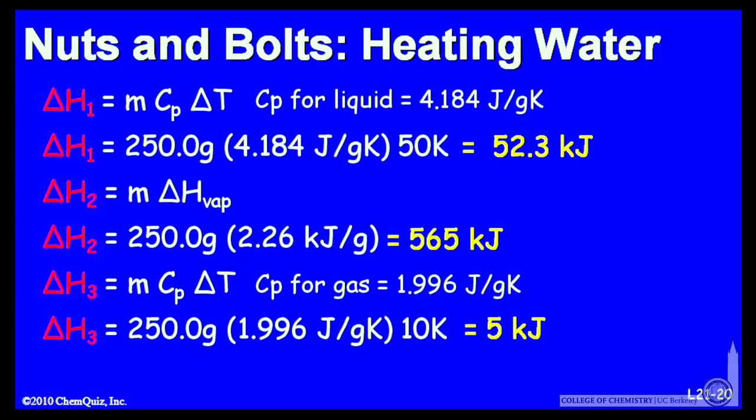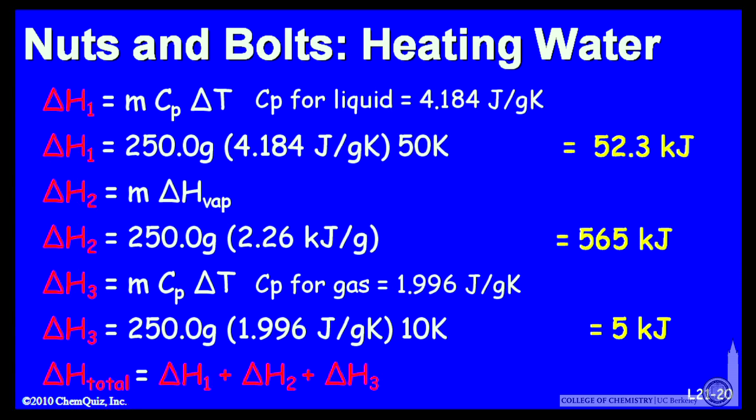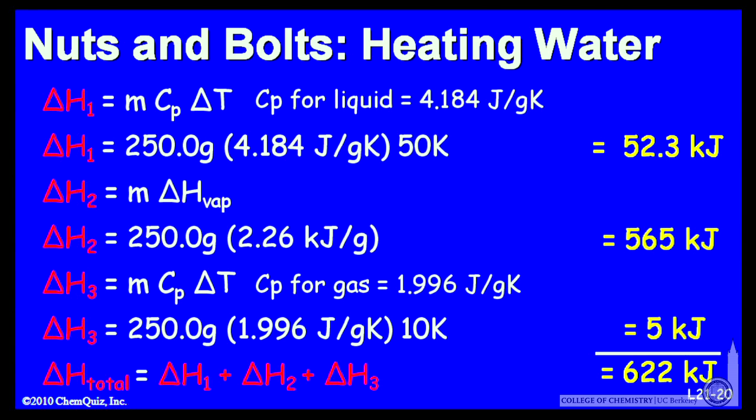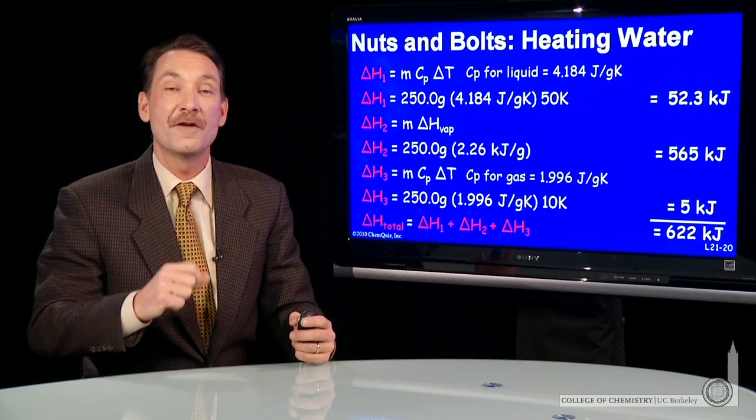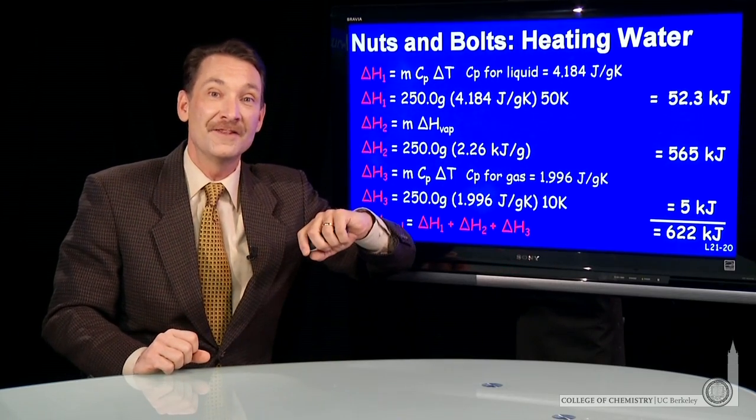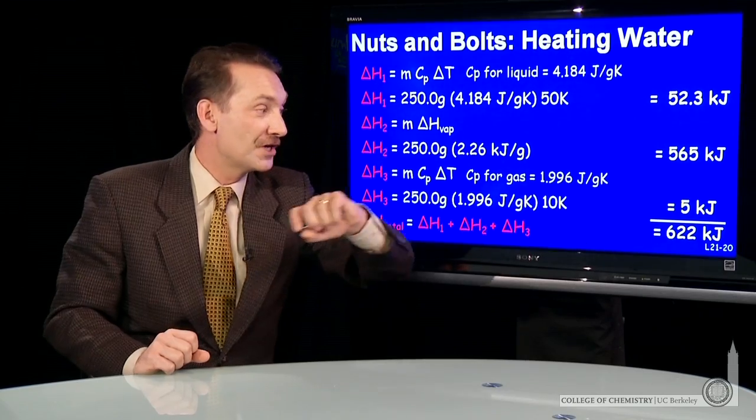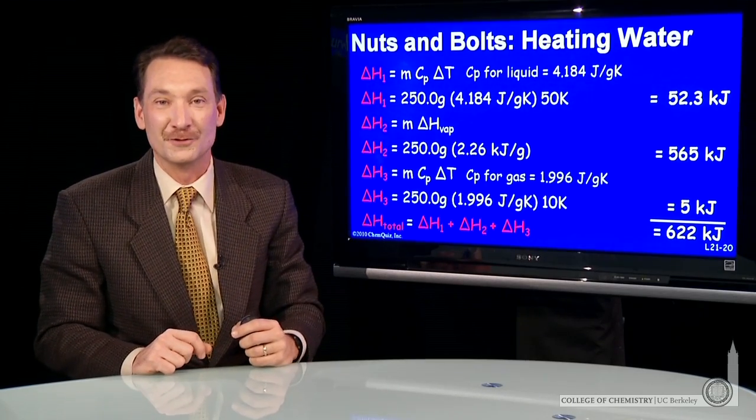So the sum of the three enthalpies will give me the enthalpy change for the total process. Let's add them up, and I'll get 622 kilojoules for that process. It's a three-step process, two temperature changes, one phase change, most of the energy in the phase change, but a total energy change of 622 kilojoules.